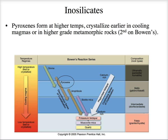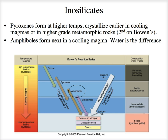Another interesting thing about this diagram: the order mirrors the order in which we covered these minerals. We talked about quartz and potassium feldspar first — tectosilicates. Then biotite — a sheet silicate. Today we're talking about inosilicates: amphiboles and pyroxenes. Next week the final lecture will be about olivine — the nesosilicates. So in crystallization order it goes nesosilicates, inosilicates, phyllosilicates, tectosilicates — the reverse of how we covered them.